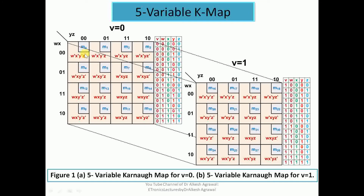In the V=0 map we have min terms starting from M0 to M15. For V=1 we have min terms from M16 to M31. In the table, the first combination all-zeros corresponds to min term M0, the last in the V=0 group is 01111 corresponding to M15, while the first in the V=1 group is 10000 corresponding to M16, and the last combination all-ones corresponds to M31.